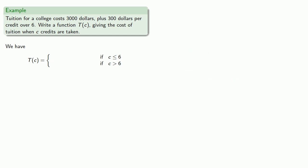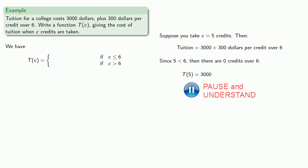Again, we can try some specific examples to see how this works. Suppose you take c equal to 5 credits. Then our tuition formula is $3,000 plus $300 per credit over 6. And since the number of credits we're taking, 5, is less than 6, then there are 0 credits over 6, and so T(5) is equal to $3,000. And again, equals means replaceable. Since c is equal to 5, we can replace 5 with c and get our formula. T(c) is equal to $3,000, which is the rule for c less than or equal to 6.